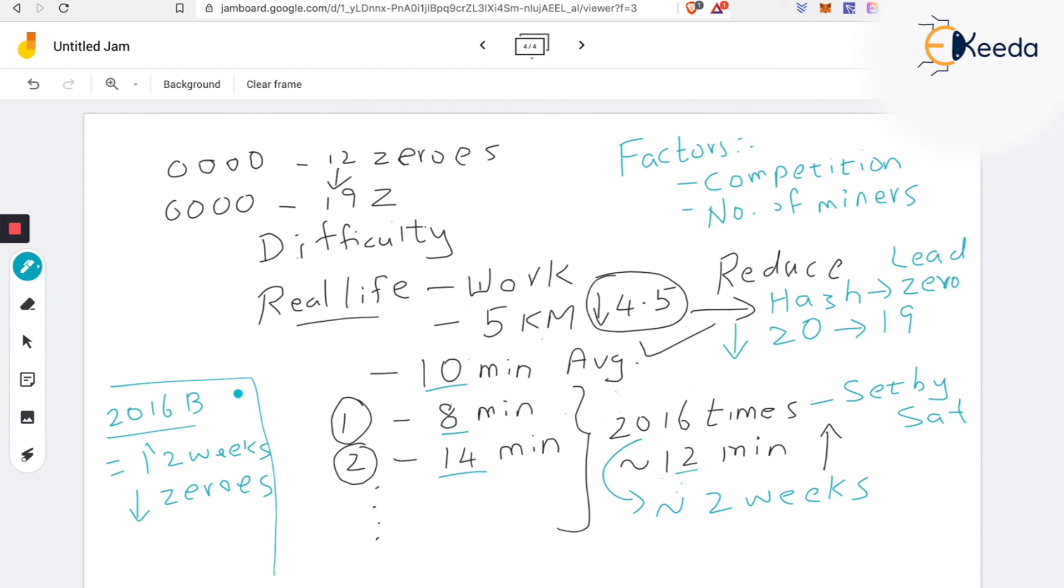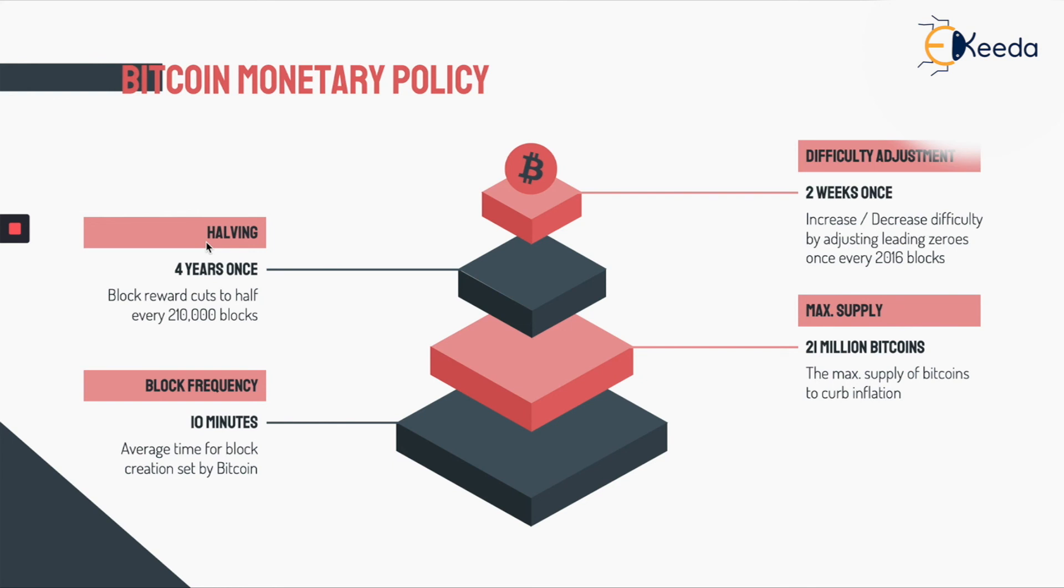Let's look at the next concept of halving. Now we have understood difficulty adjustment. Whenever someone asks you what is the block time, how is the frequency of creating a block, as you can see here also, frequency of creating a block is 10 minutes. That number is set by Satoshi, and it is adjusted accordingly. The difficulty is adjusted so that it matches an average of 10 minutes every time. It's not a set number, as in 10 minutes once a block will be created. No. The average time of creation of a block is 10 minutes in Bitcoin. That's what we have understood by looking at difficulty adjustment.